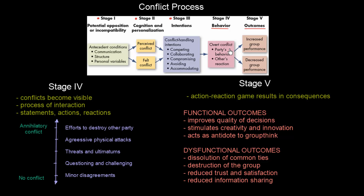Under behavior, it is an overt conflict, meaning there is some party's behavior and the other's reaction. Stage 4 is the stage about which we know the most, because here conflicts become visible. You can see the two people in conflict, and it is characterized as a process of interaction, where the two parties are really interacting.